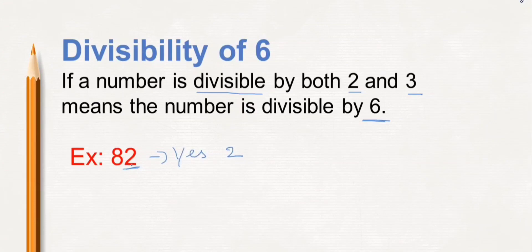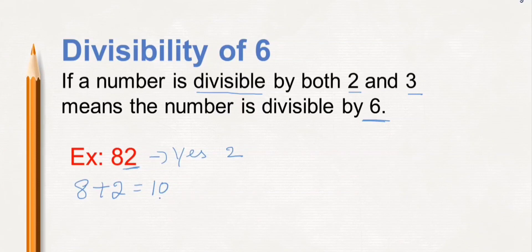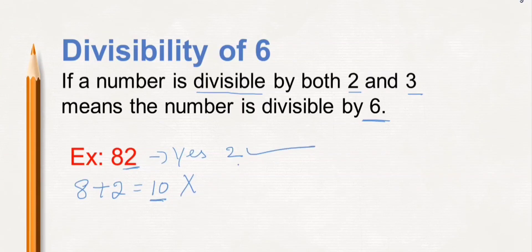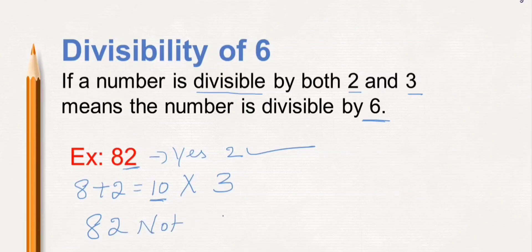Whether it is divisible by 3? How do we check? We add the digits: 8 plus 2 equals 10. Is 10 divisible by 3? No — 3 times 3 is 9, 3 times 4 is 12, but not 10. So even though 82 is divisible by 2, it is not divisible by 3. That means 82 is not divisible by 6.